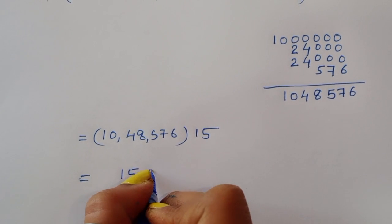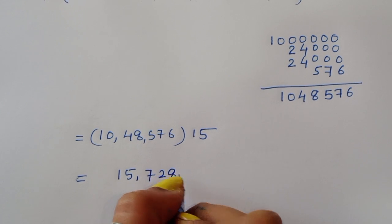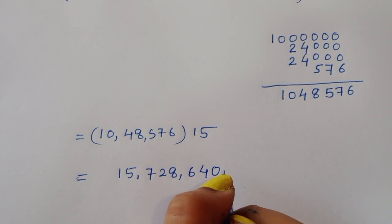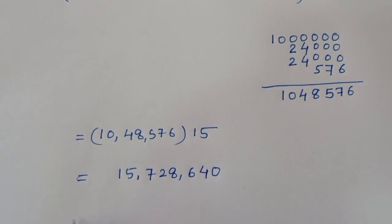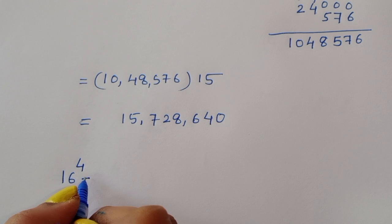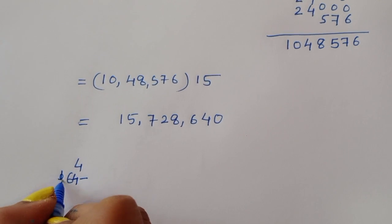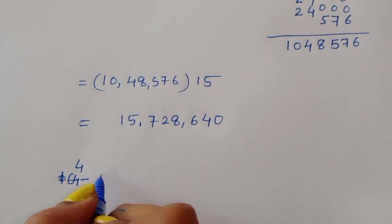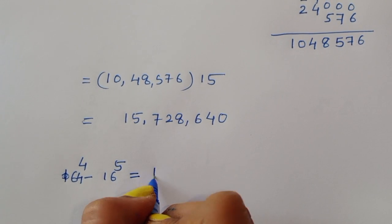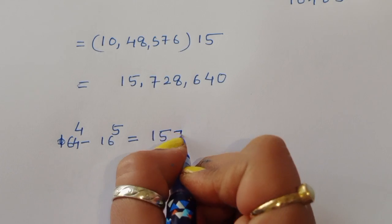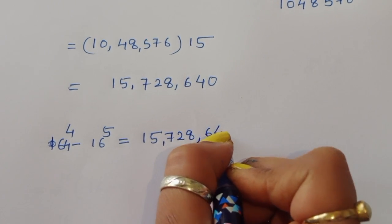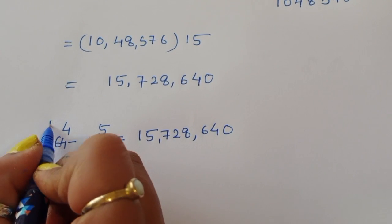So the final answer is: 64 power 4 minus 16 power 5 is equal to 15,728,640. This is the correct solution.